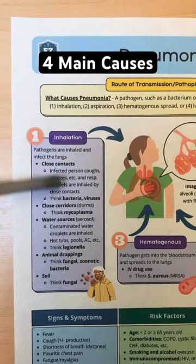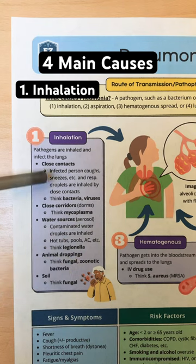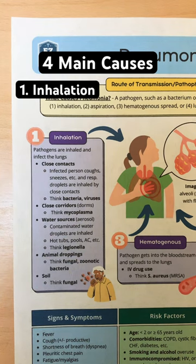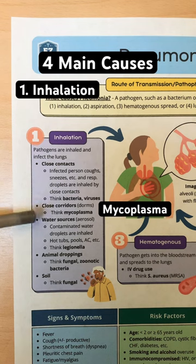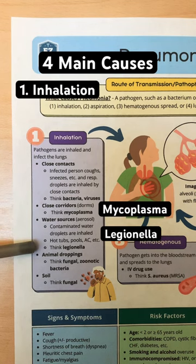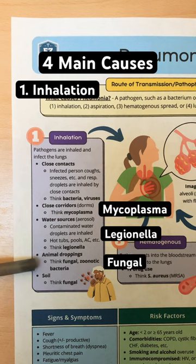There are four main causes of pneumonia. First is inhalation — this is when the pathogen is inhaled by close contacts. When it's in close corridors such as dorms, think mycoplasma. When it's water sources, think Legionella. And when it's animal droppings or soil, think fungal.